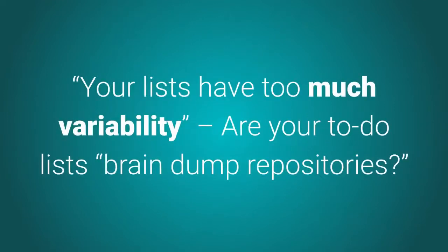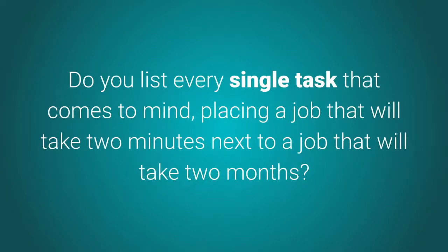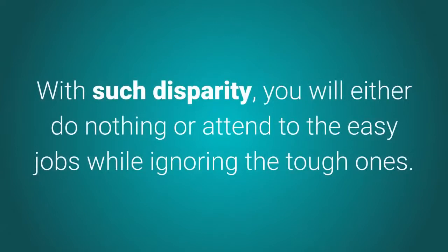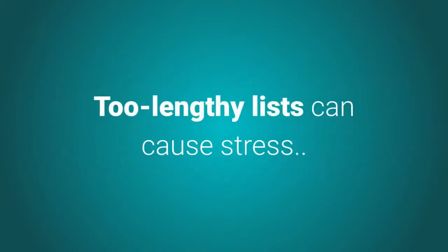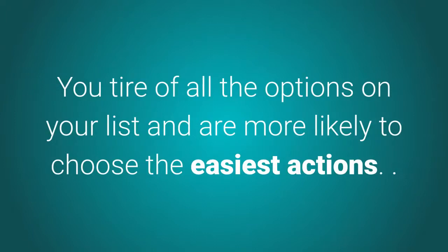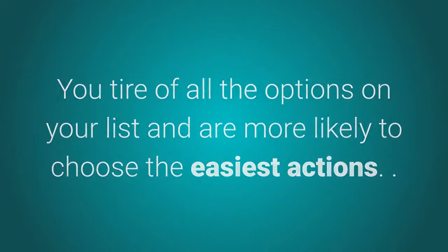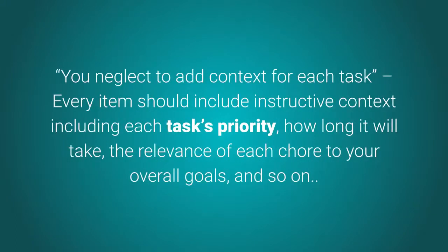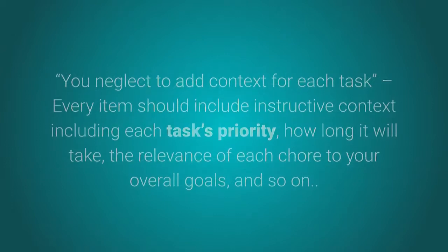The fourth reason: your lists have too much variability. If your to-do lists are brain dump repositories where you list every single task, placing a two-minute job next to a two-month job, you will either do nothing or attend to easy jobs while ignoring the tough ones. The fifth reason: too-lengthy lists cause stress. You give yourself too many options, leading to decision fatigue — you tire of all the options and are more likely to choose the easiest actions. The sixth reason: you neglect to add context for each task. Every item should include each task's priority, how long it will take, and its relevance to your overall goals.